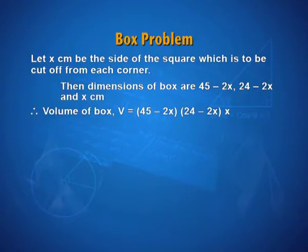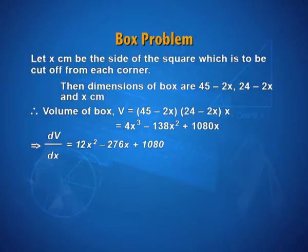So, the volume of the box l into b into h is a cubic function resulting as 4x³ minus 138x² plus 1080 times x. Find the derivative because we are going to use the derivatives to find the point of maxima and minima.